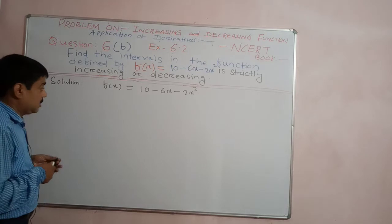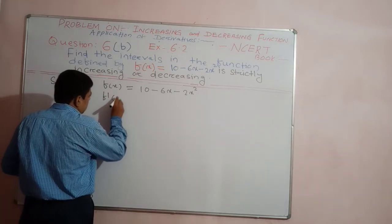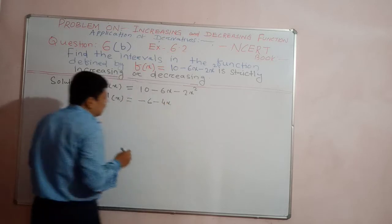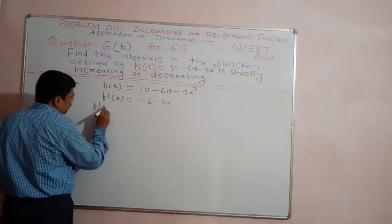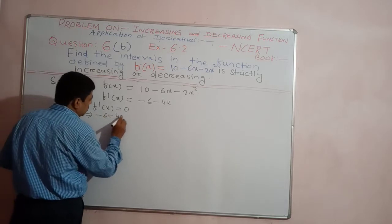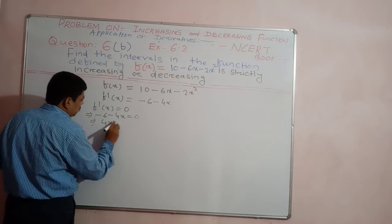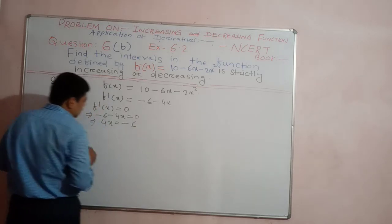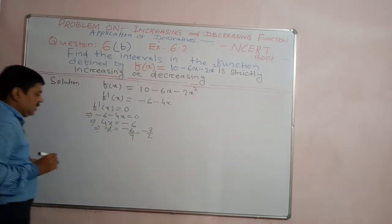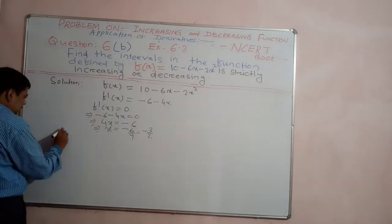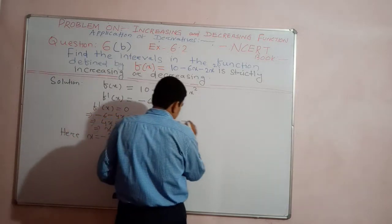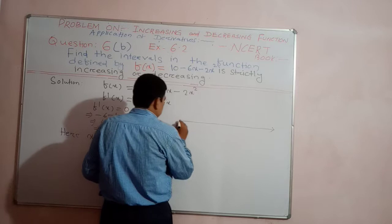So to find the increasing and decreasing intervals, we have to find the derivative. The derivative of the function f'(x) is equal to -6 - 4x. Now let us equate the derivative to 0: f'(x) = 0 implies -6 - 4x = 0, which gives 4x = -6, so x = -3/2. Since the domain is the set of real numbers, this divides the real number line into 2 disjoint sets.